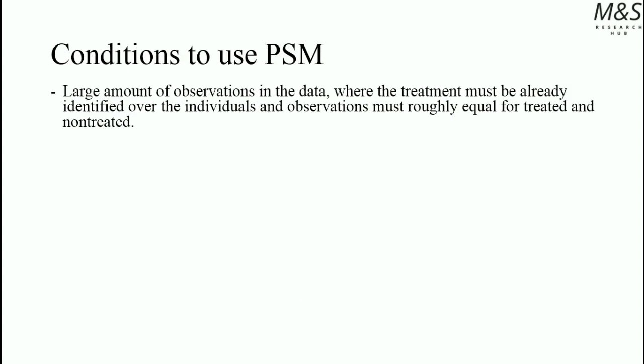Some conditions are needed to use this approach. A large amount of observations in the data are needed, where the treatment must already be identified over individuals, and observations must be roughly equal for treated and non-treated in the sample. Since we are constructing a probability model using logistic or probit regressions with maximum likelihood estimation, a serious amount of observations is required — ideally greater than 1000. We must also ensure the treated sample broadly matches the non-treated sample so the probability construct is unbiased.